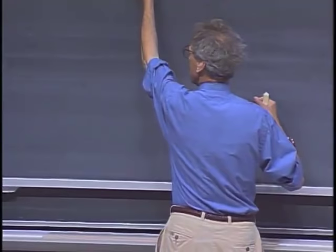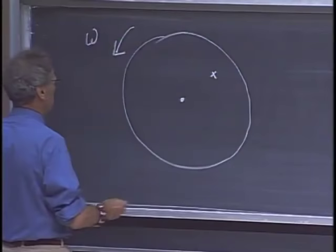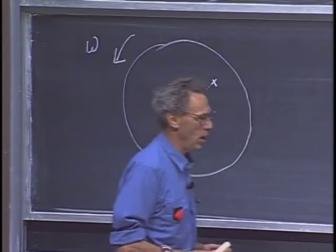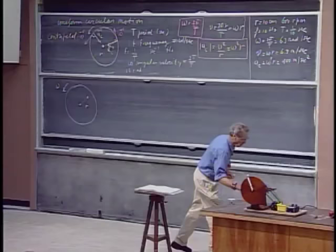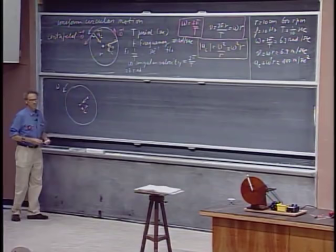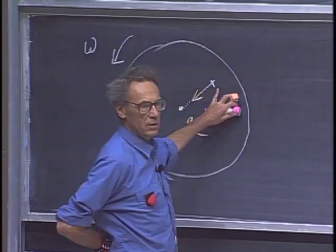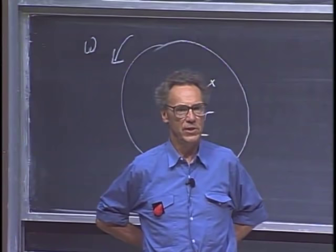Imagine a turntable: you are sitting on a chair going around with angular velocity omega, at distance r from the center. You must experience a centripetal acceleration a_c = omega squared times r — that is non-negotiable. If your seat is bolted to the turntable, you will feel a push in your back. You feel the seat pushing you inward, and that push is necessary for the acceleration.